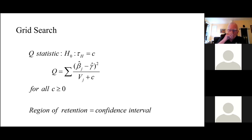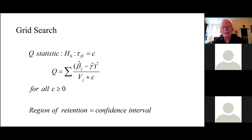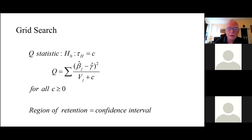So now we have an exact confidence interval — exact under normality, because Q is a chi-square only if beta-hat has a normal distribution. That's something to think about, but we could substitute other things. The key idea is the grid search: we do this for every possible C, zeroing in on the endpoints of the confidence interval.